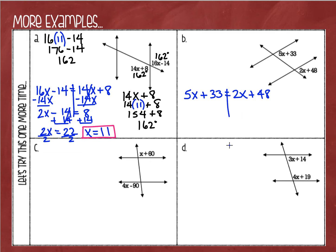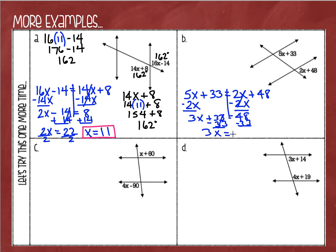I'm going to subtract 2x from each side, leaving me with 3x plus 33 equals 48. Then I'm going to subtract 33 — just solving a two-step equation — and I get 3x equals 15. My last step will be to divide by 3, leaving me with x equals 5. We know by this point that this does not mean the answer is 5 degrees.